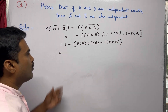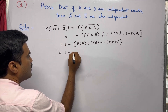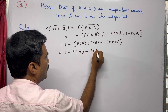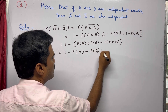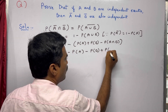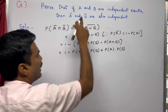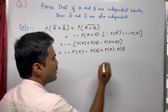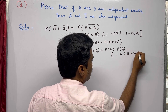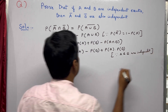Take the minus sign inside, so this becomes 1 − P(A) − P(B) + P(A ∩ B). Now since A and B are independent, P(A ∩ B) can be written as P(A) · P(B), giving us 1 − P(A) − P(B) + P(A) · P(B).